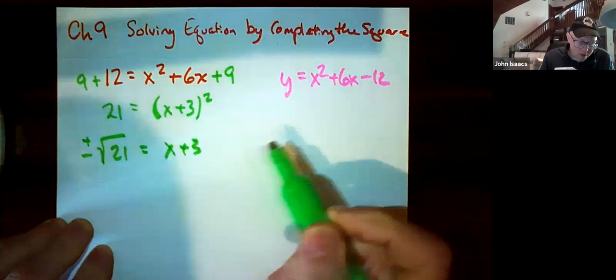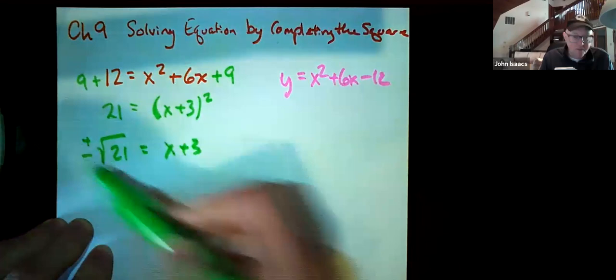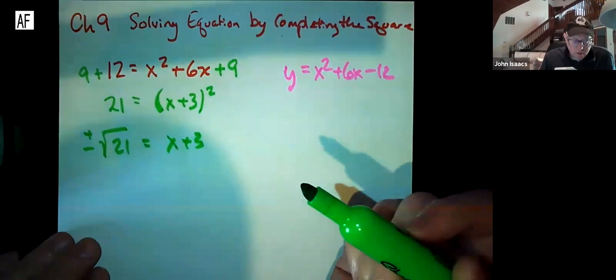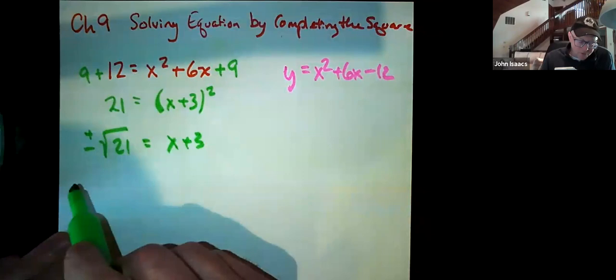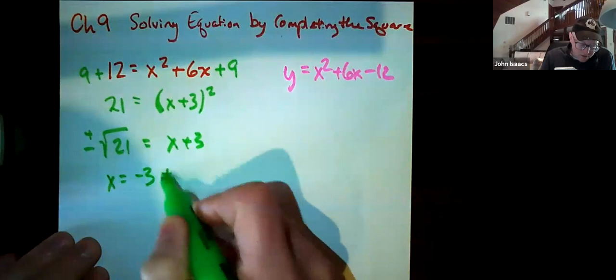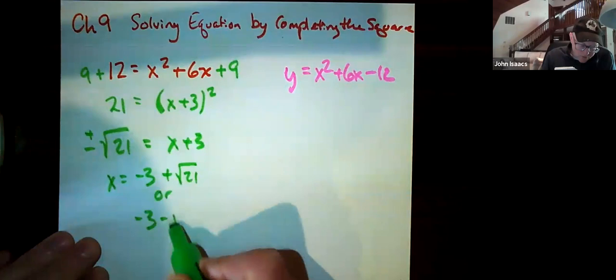So we wind up with plus or minus square root 21 equals x plus 3. This is what you really wind up with is the absolute value of x plus 3 equals root 21. And then the plus or minus come in. So the plus 3 here needs to be moved over, so we have to subtract 3. So we wind up with x equals negative 3 plus root 21 or negative 3 minus root 21. Those are your two solutions.